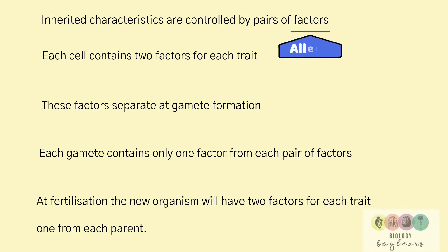So let's change the word factors to alleles - different versions of the same gene. It makes more sense. Inherited characteristics are controlled by pairs of alleles. Each cell contains two alleles for each trait.